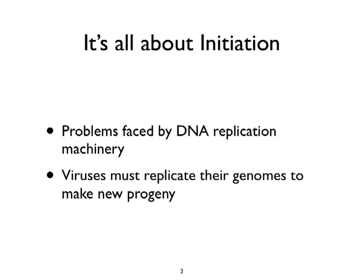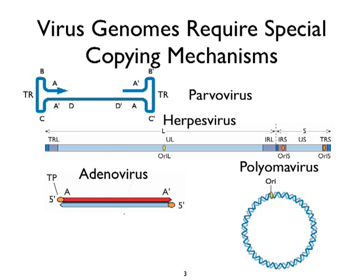The most important thing you need to know about DNA replication or transcription is that it's all about starting things off. What are the signals used to recognize polymerases? What host elements are required for this recognition process? What does the origin of DNA replication look like? These are the problems faced by DNA replication machinery of both host and virus. Viruses must replicate their genomes in order to produce new progeny.